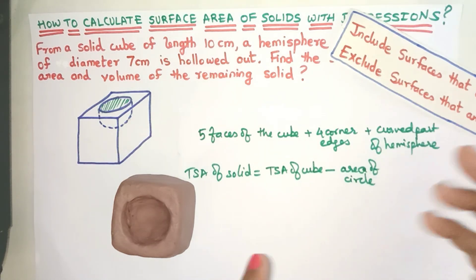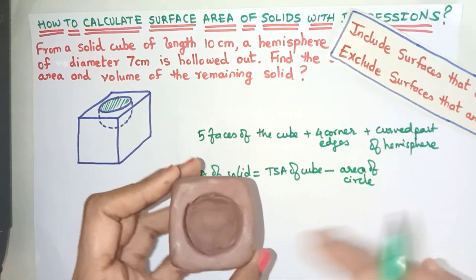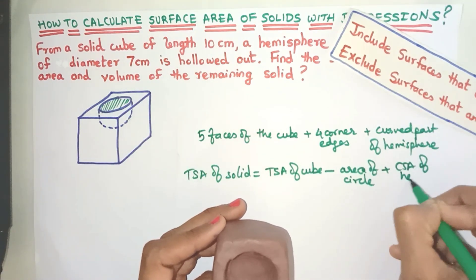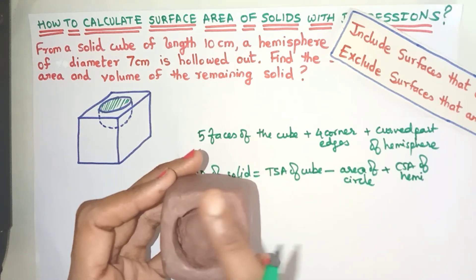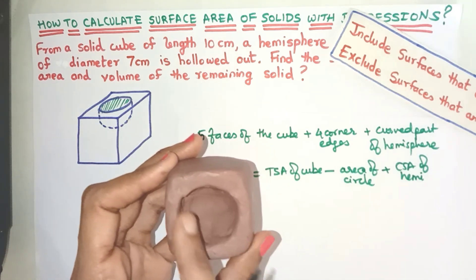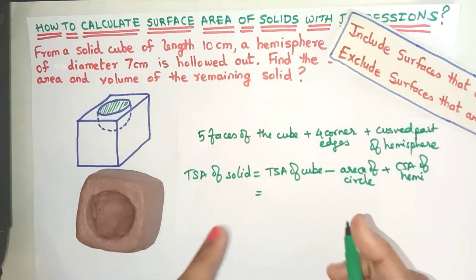Now how do we get the curved part of the hemisphere? Yes that's very simple. We just have to take the curved surface area of the hemisphere. We don't have to take the TSA because remember TSA will also include the flat circle over here but that is already removed. So now let's find out what are the formulas that will be needed.